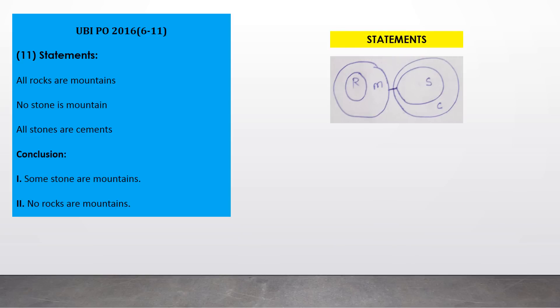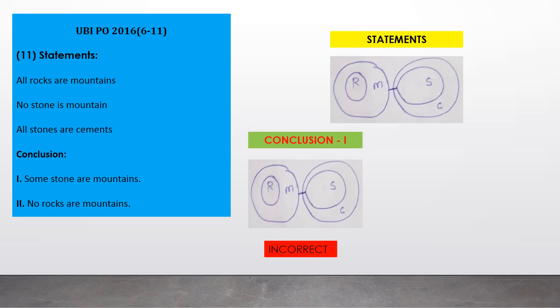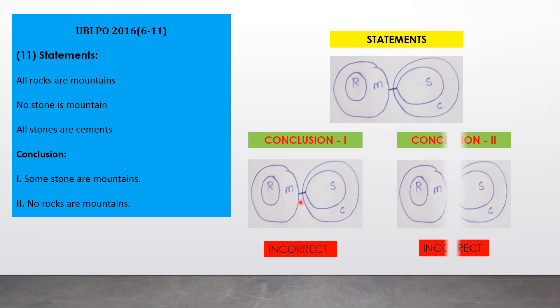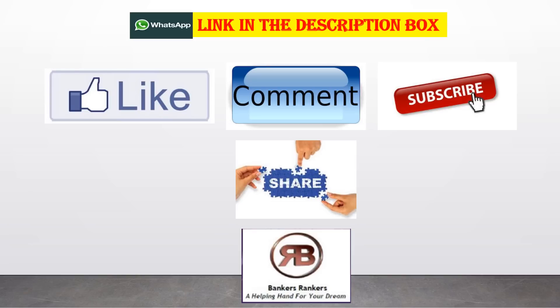Question 11 — Same statements. Conclusion one: 'some stones are mountains' — the basic diagram has a dash (negation) between S and M, so no stone can be mountain; the conclusion is incorrect. Conclusion two: 'no rocks are mountains' — from the diagram, all rocks are inside the mountain, so this statement is also incorrect. Answer: option D. Thank you for watching. If you liked this video, please like, comment, and subscribe to Bankers Rankers. Join our WhatsApp group (link in description) to download the questions as a PDF.